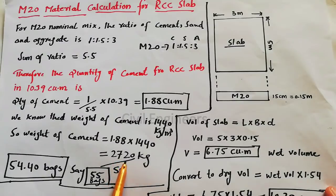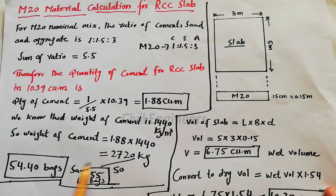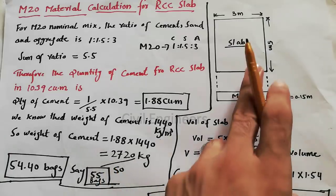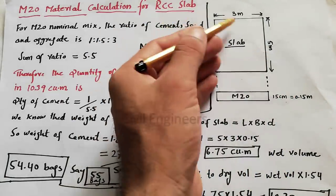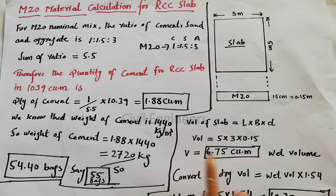Total cement kg weight in this RCC slab. Divide by 50. Why? Because one bag of cement weight is 50 kg. So 2720 divided by 50, because one bag is 50 kg, gives 54.40 numbers of bags required. Say 55 numbers of bags are required for this RCC slab if the length is 5 meter, breadth is 3 meter, and thickness of the slab is 0.15 meter.